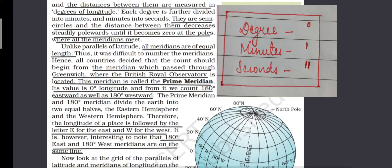The symbol of degree is a small dot, minute is one dash, and second is two dashes. Longitudes are semicircles and the distance between each longitude decreases as we move towards the poles, becoming zero at the poles. That is why all the meridians meet at the poles — because the distance between each meridian becomes zero there.